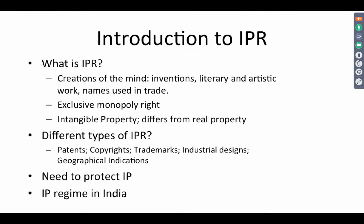Geographical indications tell you the origin of certain goods from a particular geography — for instance, Darjeeling tea. If it is covered by a geographical indication, you would not be able to pass off any other tea as Darjeeling tea unless it comes from that geographical territory. It is like a community mark held by the people who produce goods from a particular location, and the geography itself contributes to the quality of the product through climatic conditions, soil, and similar factors.